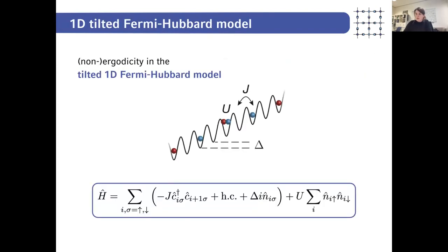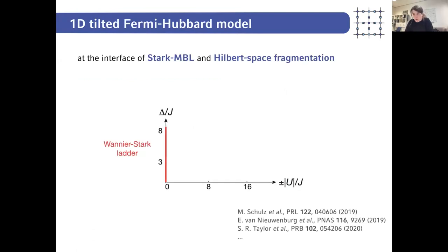One model that has been suggested to realize dipole-moment-conserving dynamics is the tilted Fermi-Hubbard model, which is easy to realize experimentally. What we do is apply an additional linear potential using magnetic field gradients, which introduces an energy offset delta between neighboring sites. There is a plot showing the tilt difference between neighboring sites delta and the Hubbard interaction energy U.